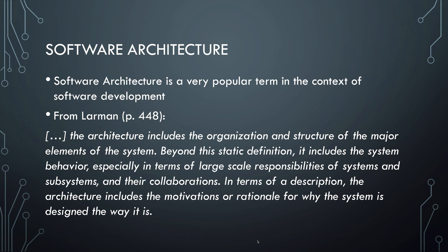But what do we mean by software architecture? It's a very popular term in software development — you can look it up in Wikipedia, but that doesn't necessarily clarify what it actually means. Larman also provides a definition: software architecture includes an overview of the major elements of a software system, how these major elements are related, what they do, and what they are responsible for. Responsibility is an important concept in software design. Overall, software architecture should explain why a system is designed in a particular way and what the trade-offs are that led to this design.